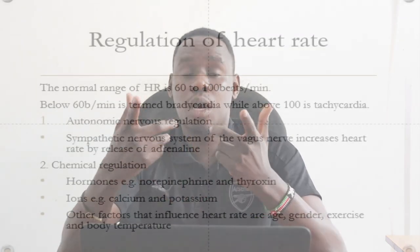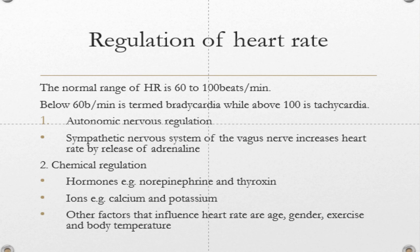The normal heart rate is 60 to 100 beats per minute. We check the heartbeat by checking the pulse rate. If someone's pulse rate is below 60 beats per minute, we say this person has bradycardia — a low heart rate. If the pulse rate is above 100 beats per minute, we say this person has tachycardia, meaning they have a higher pulse rate.